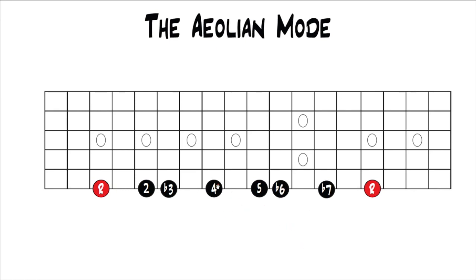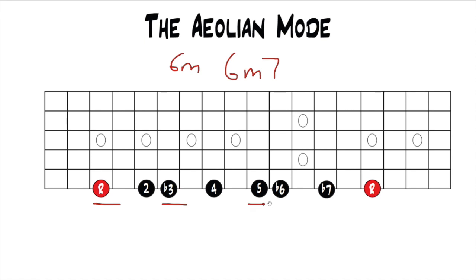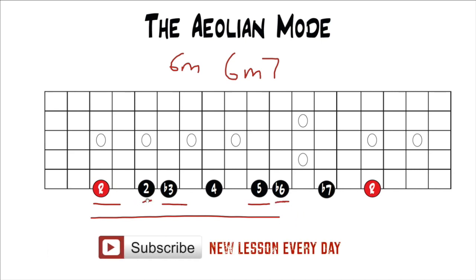Just like with all the other modes, take one chord and play the mode up and down over it to listen to all the intervals. If you're playing G Aeolian, take a G minor chord and play each note over it slowly — play the scale up and down over the chord and listen to each interval to really get the sound in your head. You can also do the same thing with a G minor 7. The root, flat 3, and 5 are your most stable intervals — you can really rest on them. But they're your most vanilla; they're not going to bring out the sound of this mode. Really emphasize the flat 6 along with the major 2nd if you want to get the sound of the Aeolian mode.